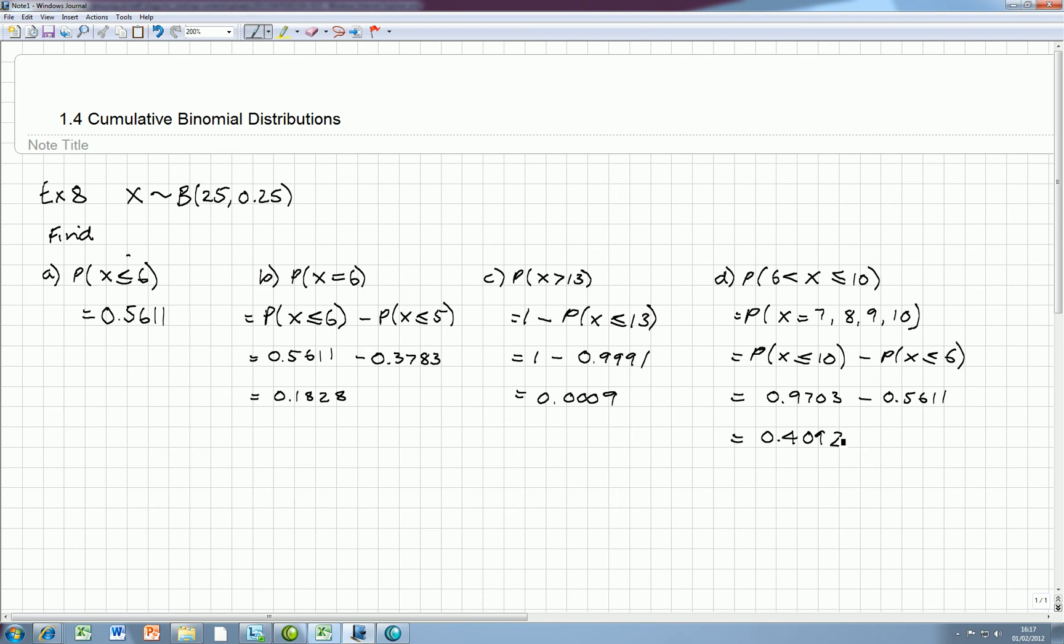So sometimes, you've got to think very carefully about the values that the question's asking for. The distribution table is always phrased like this: x less than or equal to a number. There's a little trick there if you want to find a single value. So, for example, to find the single value of x equals 6, work out the probability of x is less than or equal to 6, and subtract the probability of x less than or equal to 5.